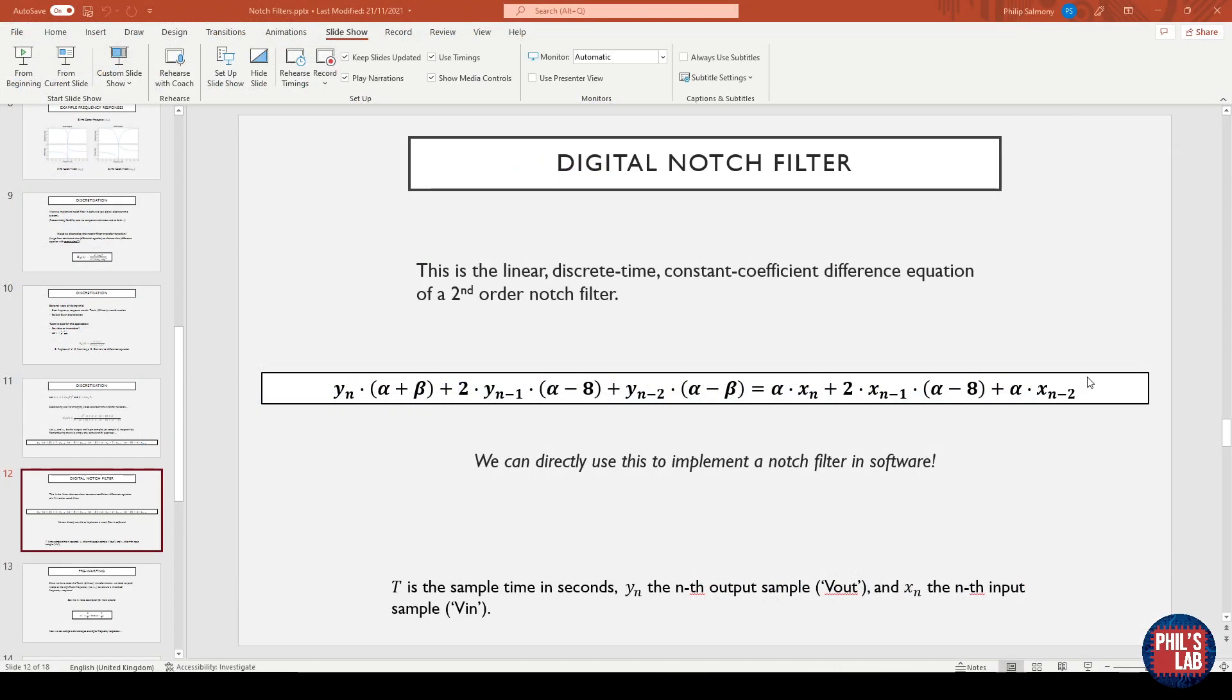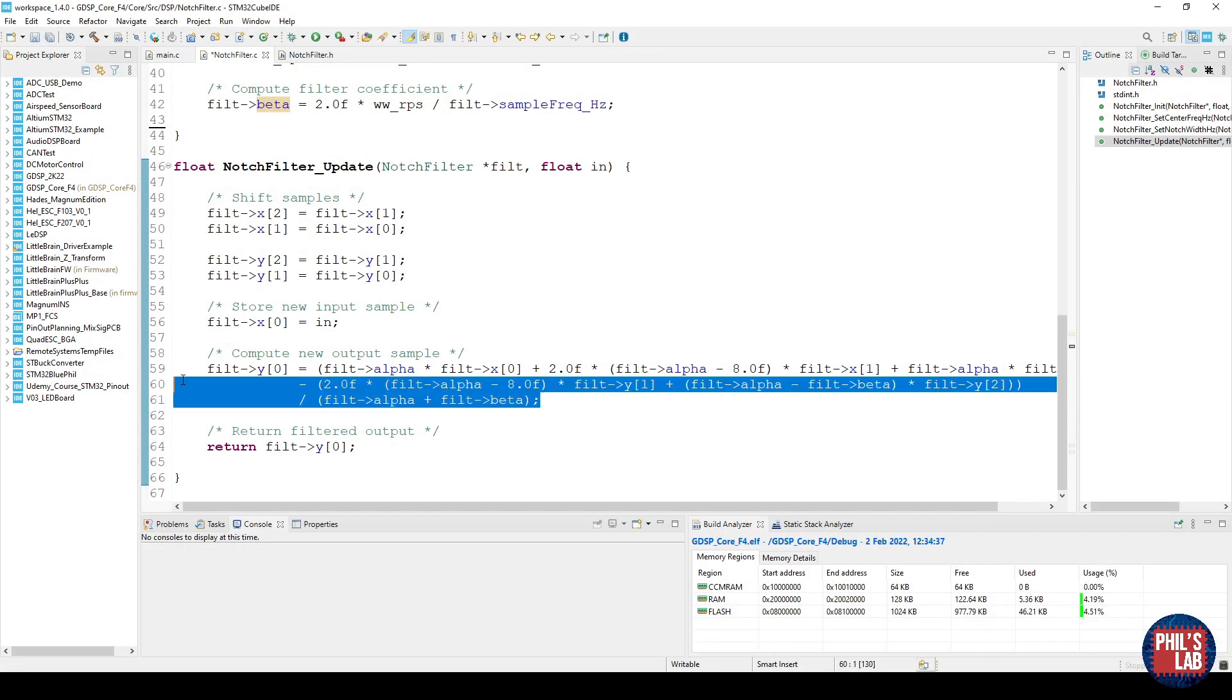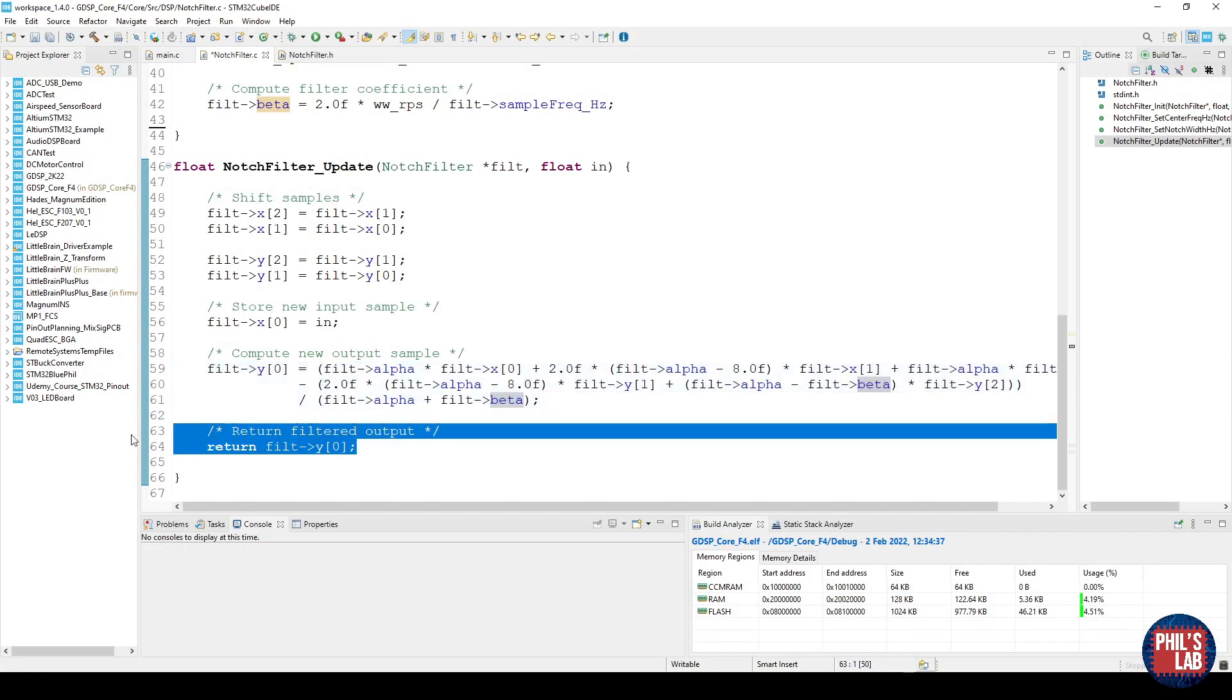Then I simply implement the difference equation we saw in the slides. So all of this text here is simply this difference equation implemented. So I compute this side, I subtract these two y_n-1 and y_n-2 terms and I divide by alpha plus beta to give my latest output sample. Once I've done that computation, I can simply return the filtered output.